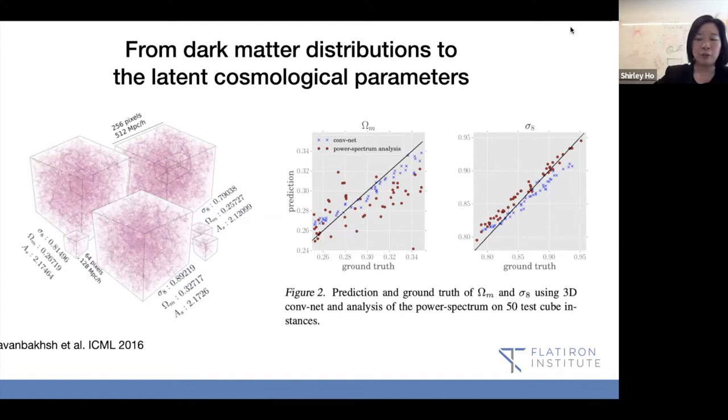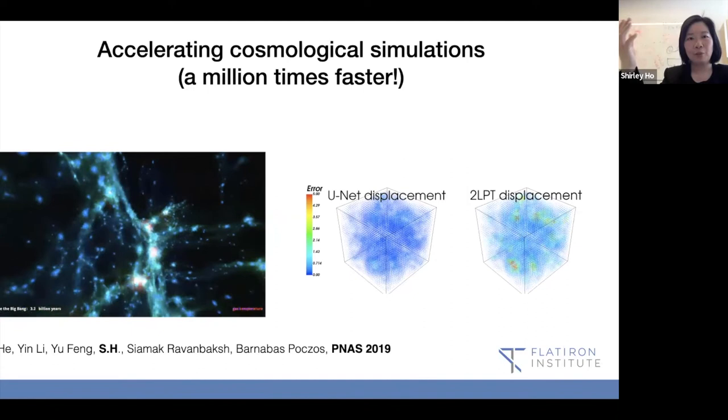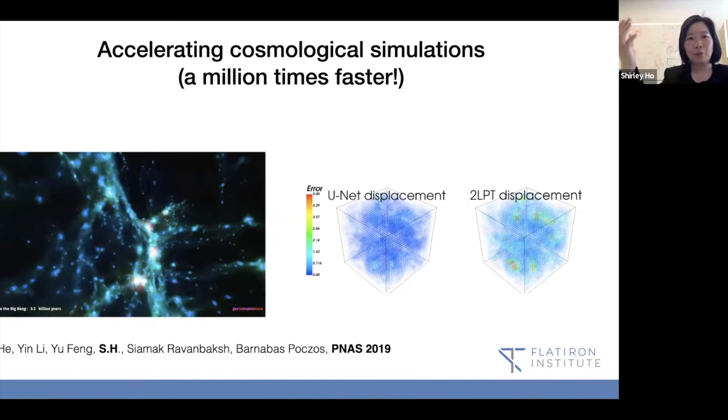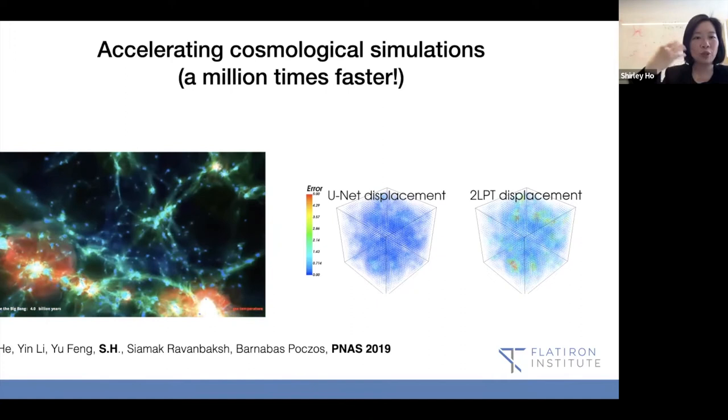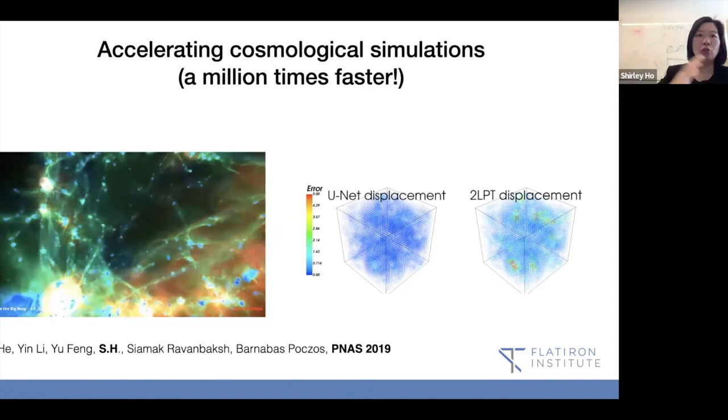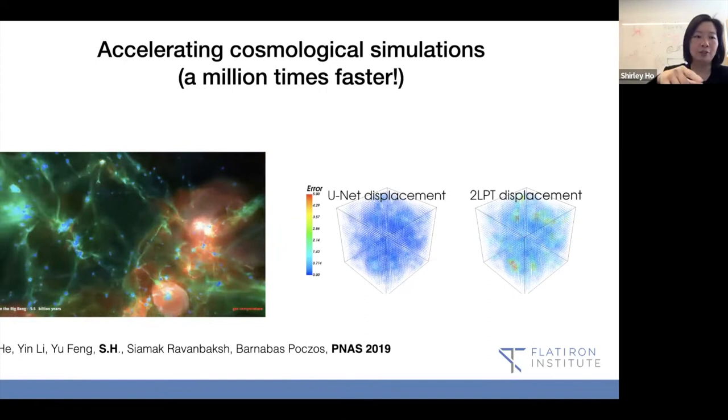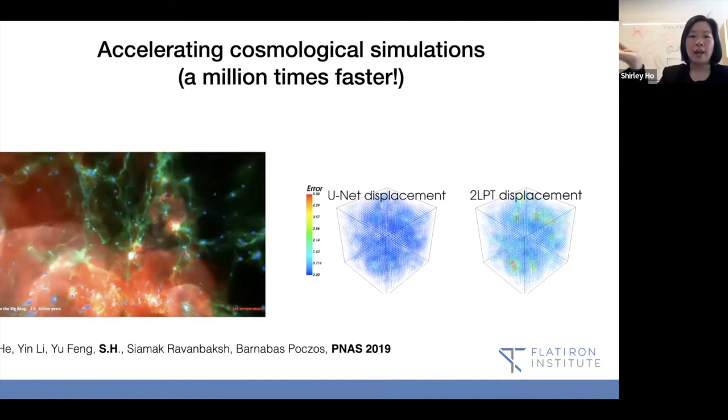Another thing we did is to accelerate these cosmological simulations, to make it a million times faster or something like this. So we did something very simple, running a UNET to go from a pen and paper prediction of the universe to the true simulation output for just dark matter simulation in this case. On the left, we're showing a simulation of the universe, and this simulation took 300 million CPU hours to run. It's a tiny chunk of the universe. Can we do it in seconds? That's what we tried to push.